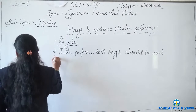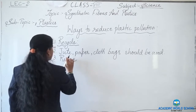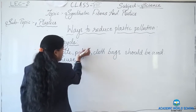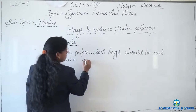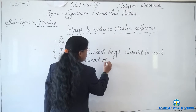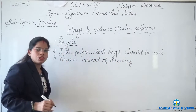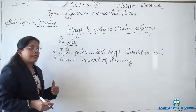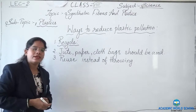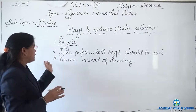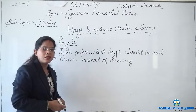The third way is reuse. Instead of throwing plastic materials, we should reuse them again and again. After throwing, it can cause pollution, and we have to buy other plastic materials again requiring more chemicals in factories. So it is better to reuse the plastic items so that pollution caused by plastic will be minimized.